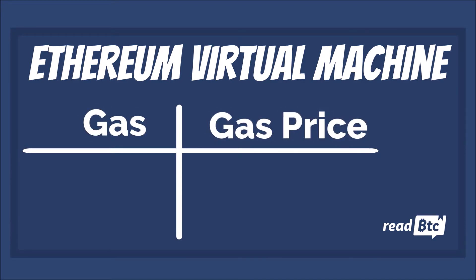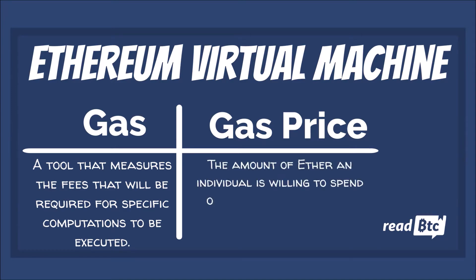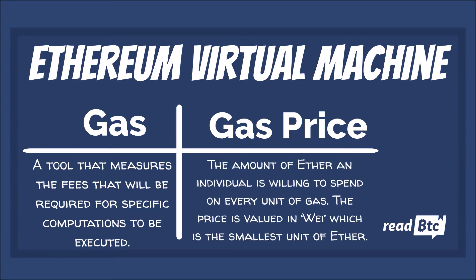Gas is a tool that measures the fees required for a specific computation to be executed. The gas price is the amount of ether an individual is willing to spend on every unit of gas. The price is valued in wei, which is the smallest unit of ether — the same as satoshi is for Bitcoin.